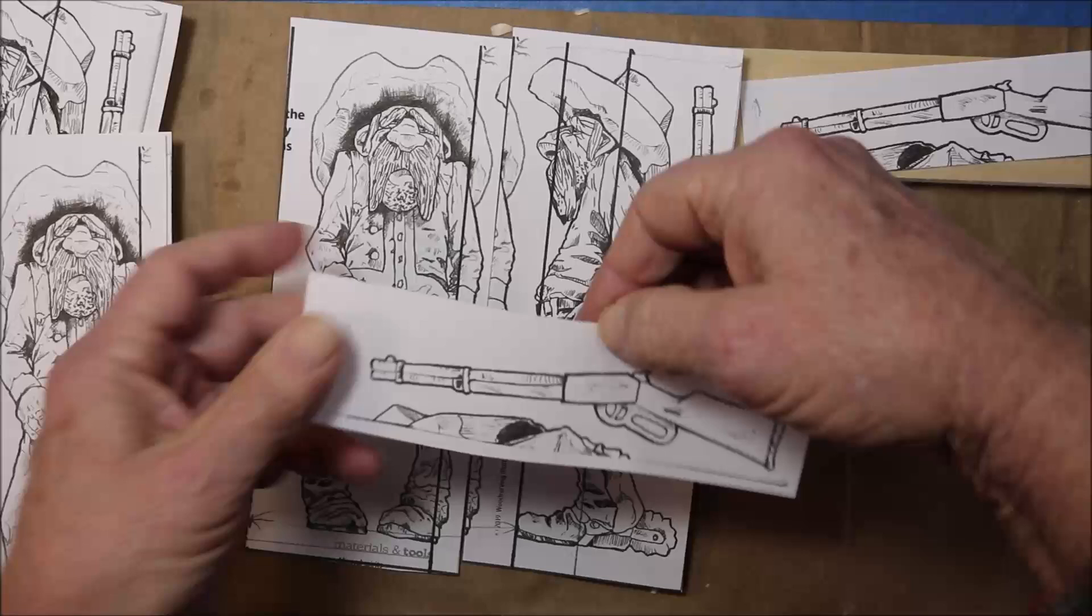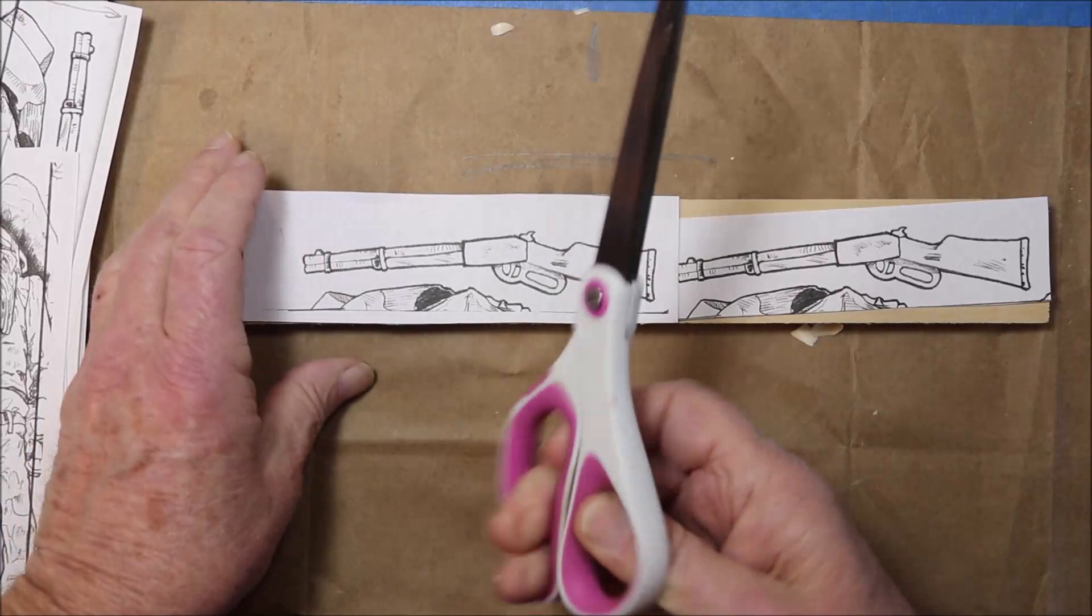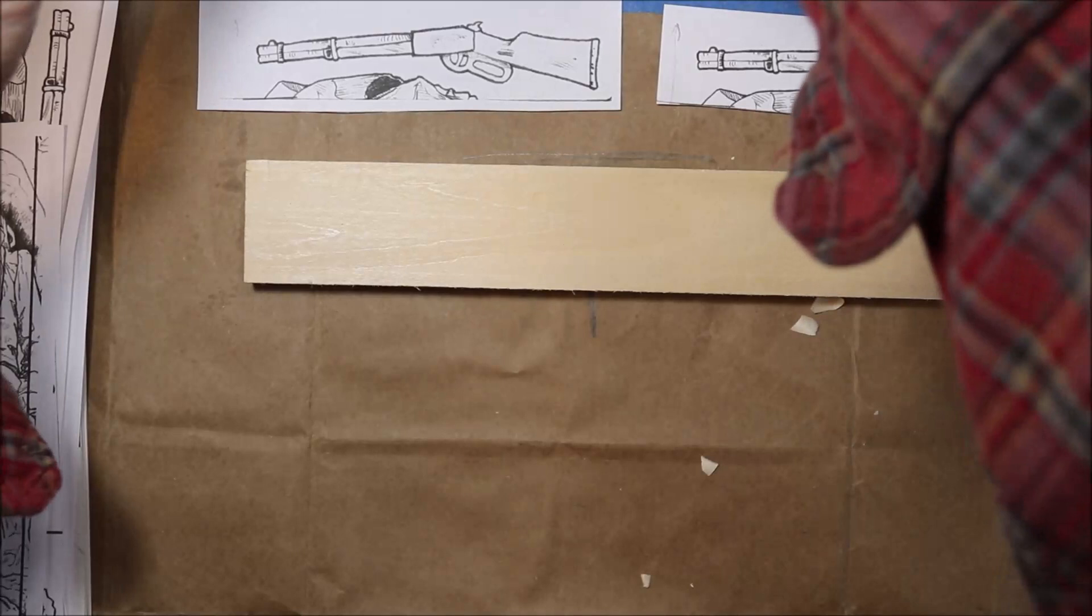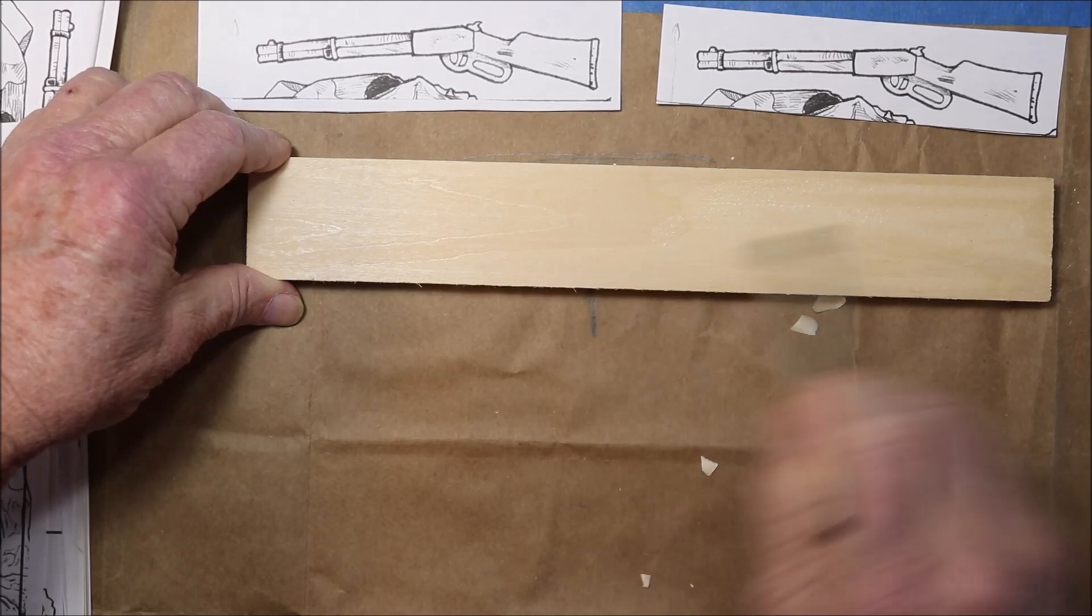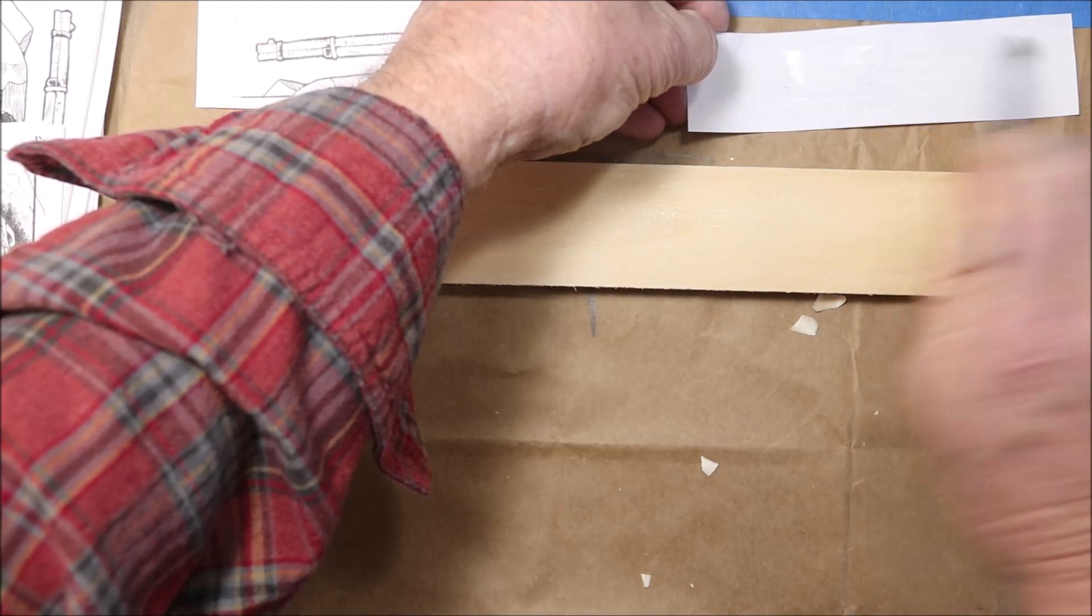That way I have a full pattern, and the rifle will be separate. I'm going to cut these rifles out first. Since I have a half inch piece of wood here, use your scissors, make a nice neat cut so you don't have any problems when you cut it out. I'm just going to smear this with some watered down regular white glue.